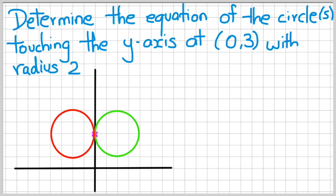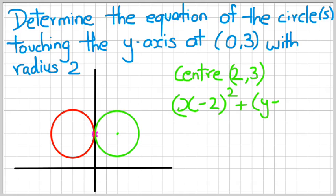We can work out the center of the green circle, which is going to be (2,3). So we can write the equation of the green circle: (x-2)² + (y-3)². And it has a radius of 2, so 2² equals 4.